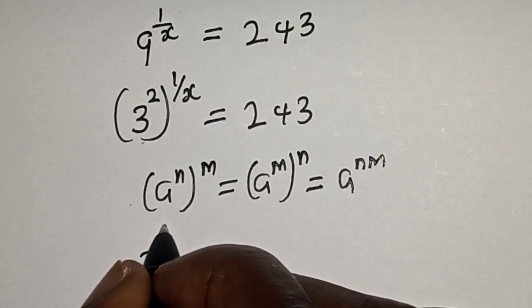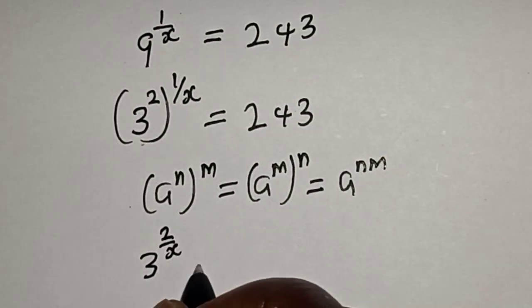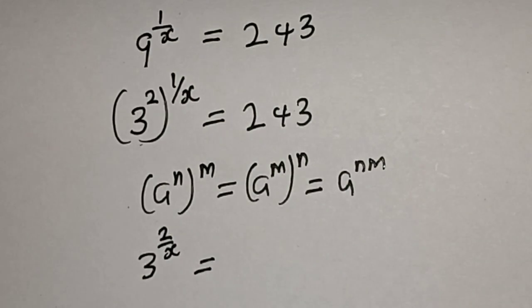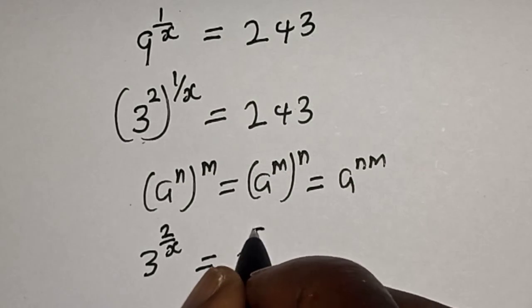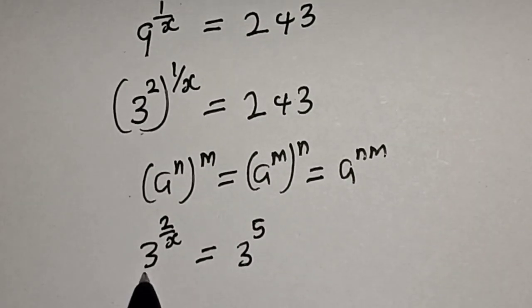Then we have 3 raised to power 2 over x equals 243, which is 3 raised to power 5. They have the same base, 3.